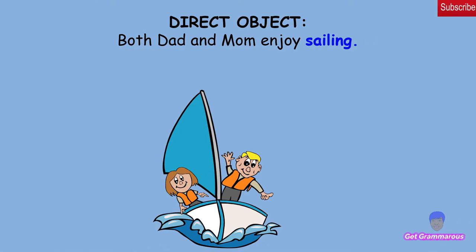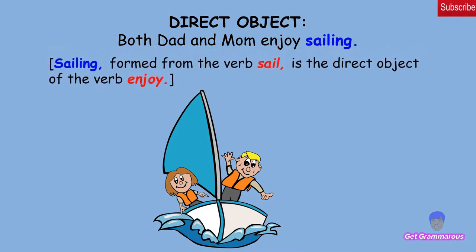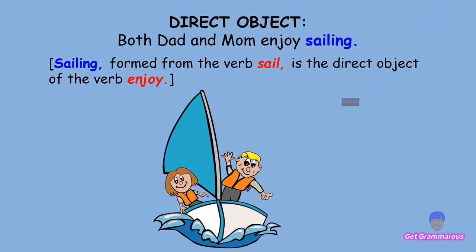Gerund used as a direct object: 'Both dad and mom enjoy sailing.' Sailing, formed from the verb sail, is the direct object of the verb enjoy.